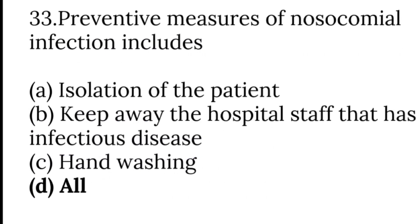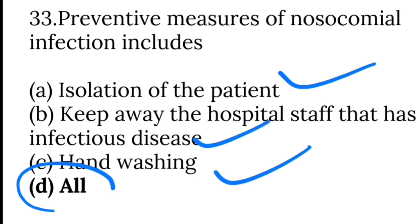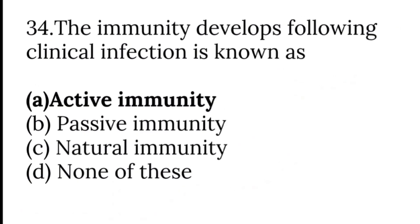Preventive measures for nosocomial infections include isolation of the patient if it is a communicable disease, keeping away hospital staff who have infectious disease, and hand washing — so the answer is all of the above. Immunity that develops following clinical infection is also known as active immunity.